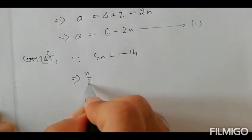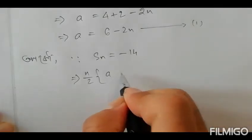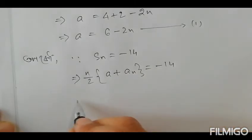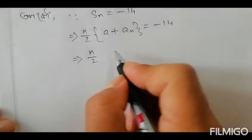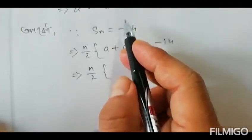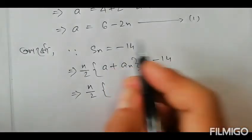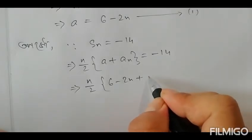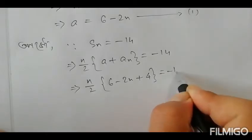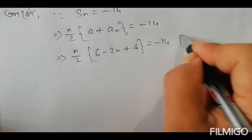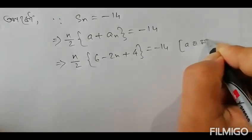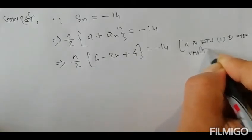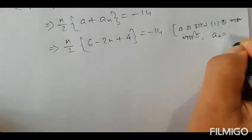Also, S_n equals minus 14. Using the formula S_n equals n by 2 times a plus a_n, we get n by 2 times a plus 4 equals minus 14. Substituting a equals 6 minus 2n, we have n by 2 times 6 minus 2n plus 4 equals minus 14.